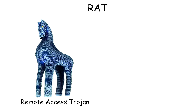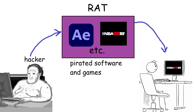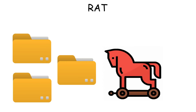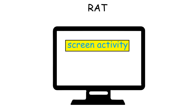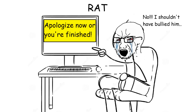A Remote-Access Trojan (RAT) is malware that secretly gives hackers full control over an infected device. It spreads the same way as regular Trojans, through downloading pirated software or games. But unlike regular Trojans whose purpose is only to steal data, a RAT allows attackers to see your screen activity, access files, activate webcams or microphones, move your cursor, or even install other malware — making it very lethal when used to blackmail someone.